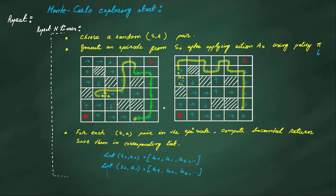We also have to assign an arbitrary policy. Then what we do: we choose a random state-action pair from all the state-action pairs we have, and generate an episode starting from that state, applying that particular action, and then onwards applying the policy. In the example, you can see we selected state S1 and action A1. We apply action A1 in state S1, and then onwards we apply the policy — I have drawn the policy in blue. These are the policies: left, right, up, down.